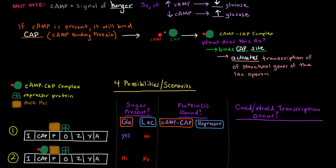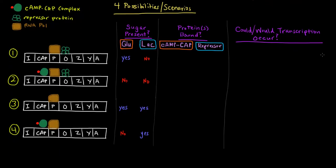Now we have to consider the availability of glucose and lactose. There are four different scenarios: first, when there is glucose and no lactose; second, when there's neither; third, when there's both; and last, when there's only lactose. Glucose availability is linked to whether the cyclic AMP-CAP complex binds the operon, while lactose availability determines whether the repressor protein is bound.